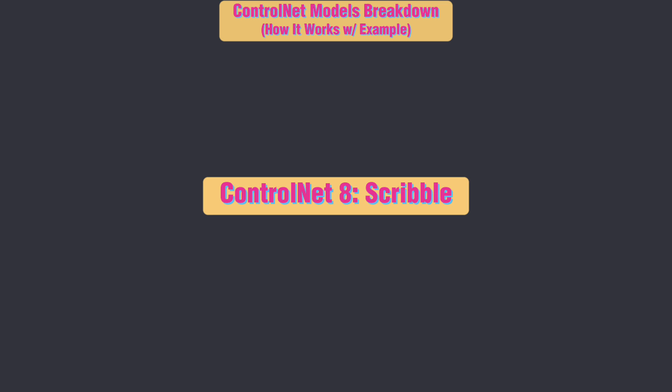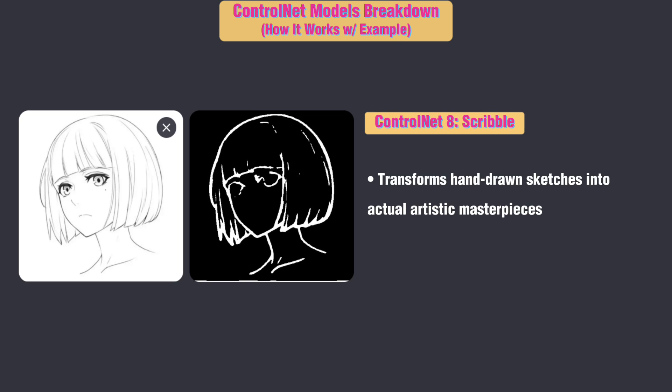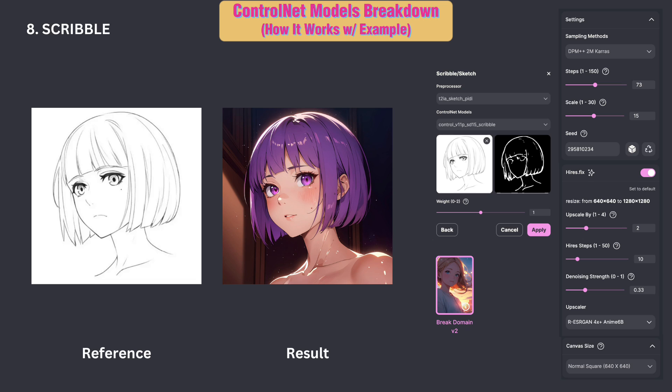ControlNet 8: Scribble. Use this to unleash your inner artist with the Scribble model, to transform your hand-drawn sketches into actual artistic masterpieces. See how I turned this simple sketch into a beautiful anime art — and it kept all the facial features.